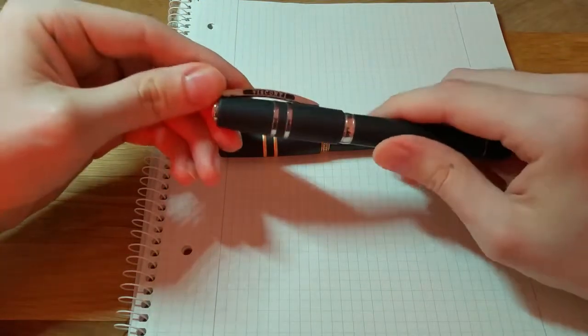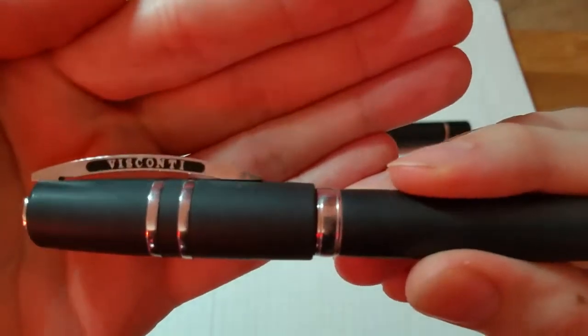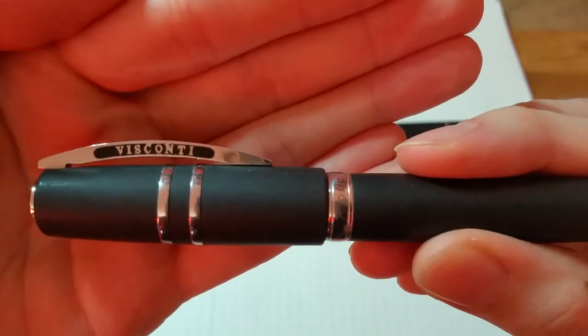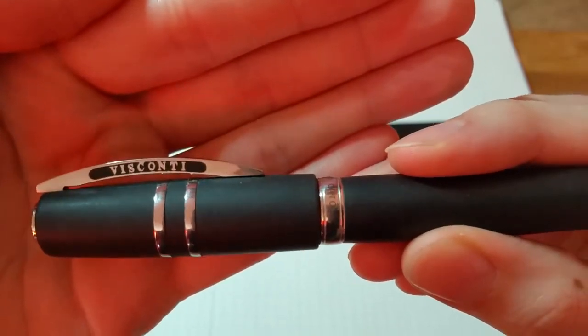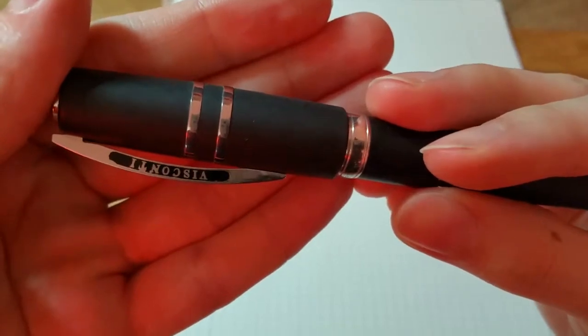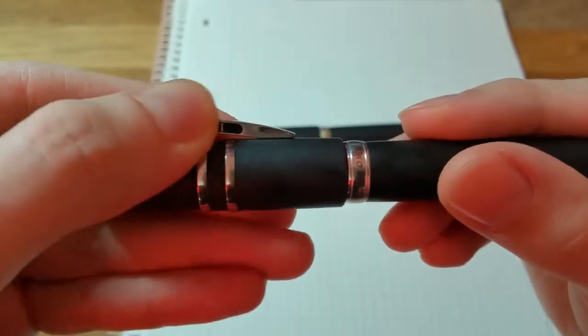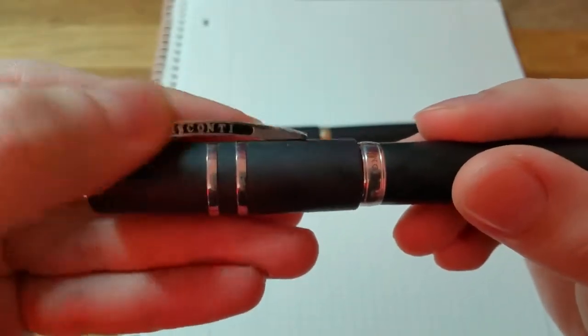But after a while I noticed that the Visconti logo on the clip actually rubs off. So the white metal is just from the clip and they add this black color to it. And it's not that hard to remove it.